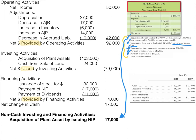Summing the three sections: $92,000 provided by operating, $79,000 used by investing, and $4,000 provided by financing. The net change in cash is $17,000. This matches our check figure — cash went from a $15,000 balance to $32,000, a positive change of $17,000. That is our completed statement of cash flows.